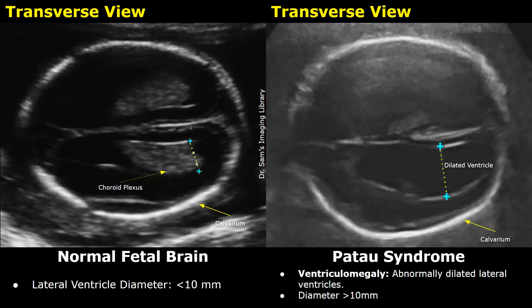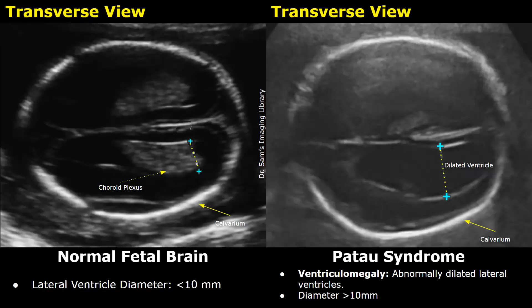Some ultrasound features indicate Patau Syndrome. The most common abnormalities include brain and facial abnormalities. Ventriculomegaly refers to abnormally dilated lateral ventricles. When the diameter of the lateral ventricle exceeds 10 mm, it is enlarged. The normal lateral ventricle diameter is less than 10 mm. An isolated ventriculomegaly does not really indicate Patau Syndrome, but if ventriculomegaly is present with other pathologies such as heart defects including ventricular septal defect or truncus arteriosus, and limb abnormalities such as polydactyly, or with kidney defects as well as facial abnormalities, it may indicate Patau Syndrome.